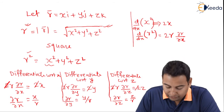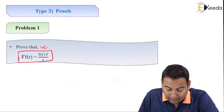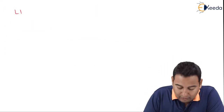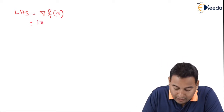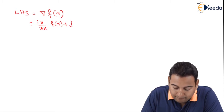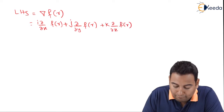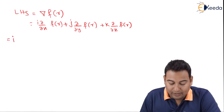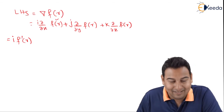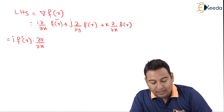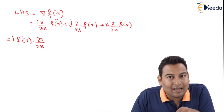Now let's see what is actually asked. The LHS is ∇f(r). The del vector operator gives: ∇f(r) = i·(∂/∂x)f(r) + j·(∂/∂y)f(r) + k·(∂/∂z)f(r). Differentiating f(r) with respect to x by the chain rule: if differentiating f(r) with respect to r alone it is simply f'(r), but here we differentiate with respect to x.